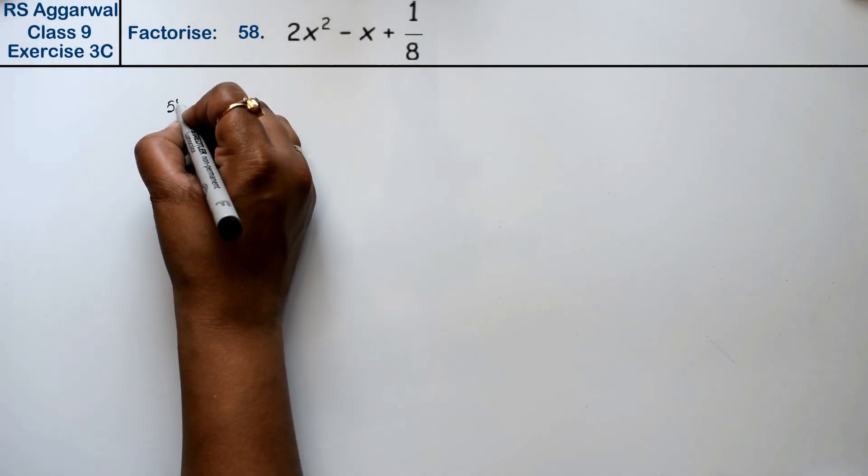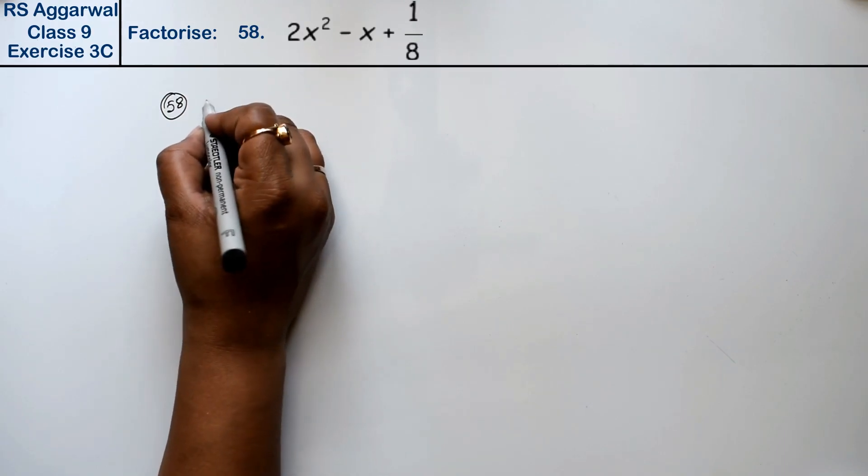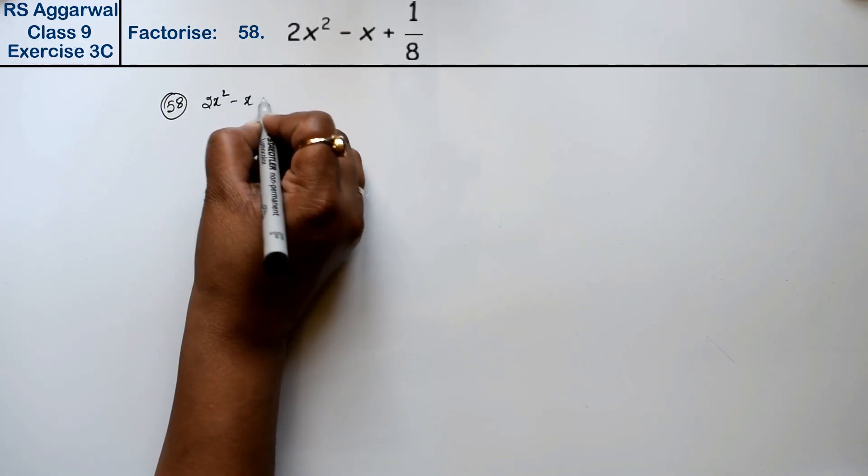Let's do question number 58 of exercise 3C, that is factorization of polynomial. Question number 58 is 2x² - x + 1/8.